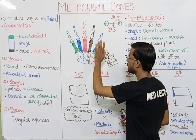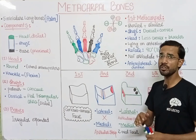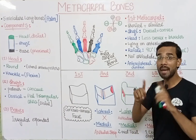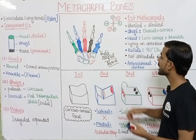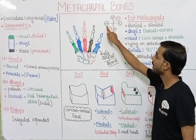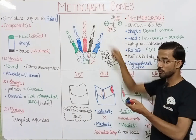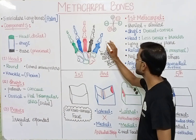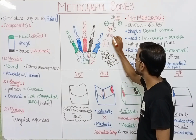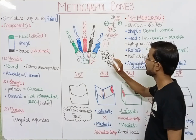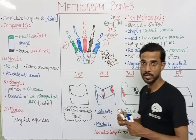Before we discuss, we look at the orientation map for the metacarpal bone. Lateral and medial are very important. The lateral part will always be present at the thumb side, and the opposite will be the medial part.